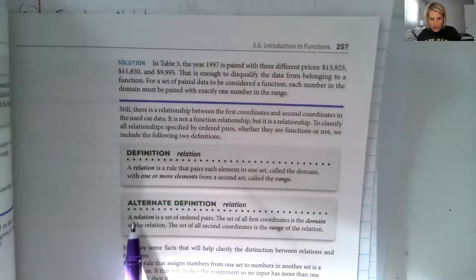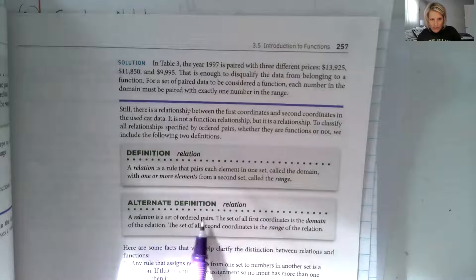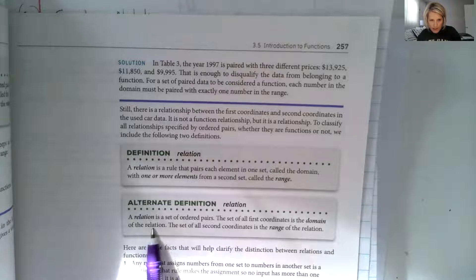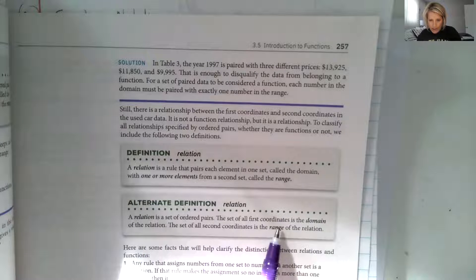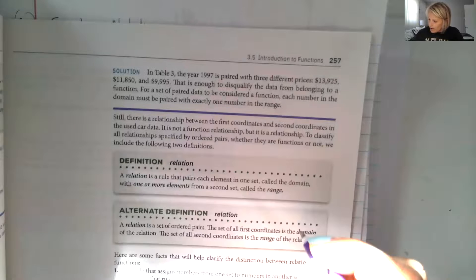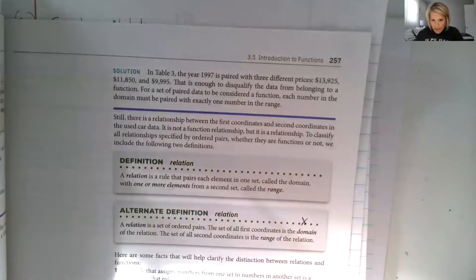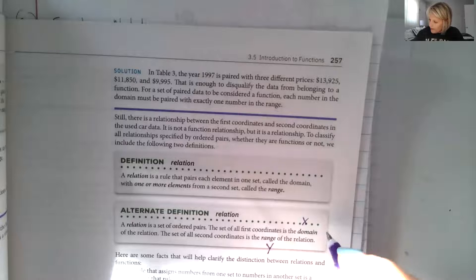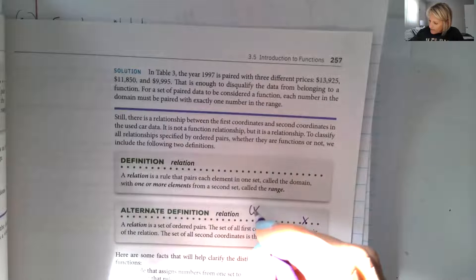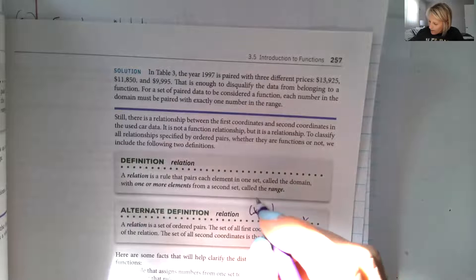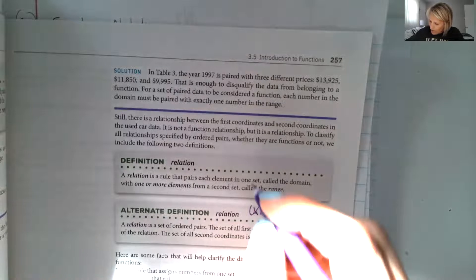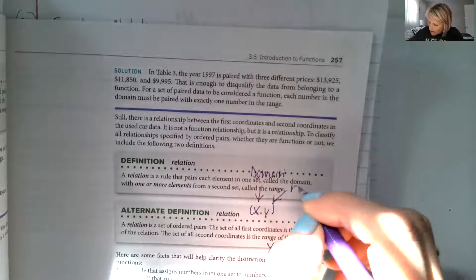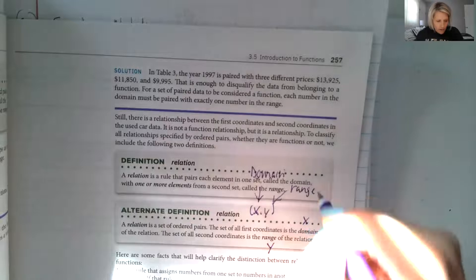An alternate definition is a relation is a set of ordered pairs. The set of all first coordinates is the domain of the relation. The set of all second coordinates is the range. And usually our domain is going to be our X values and our range will be our Y values. So when we write them as X comma Y, these are usually our domain values and the Y's are the range values.